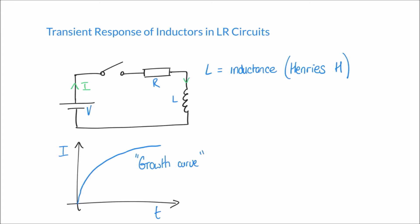This is an example of a growth curve and a transient response. I've called it an LR circuit in the title — L standing for inductance and R standing for resistance — meaning we've got an inductor and a resistor in this circuit. When we close the switch, current begins to flow but increases in the form of this growth curve. Like with capacitors, an LR circuit will have a time constant.